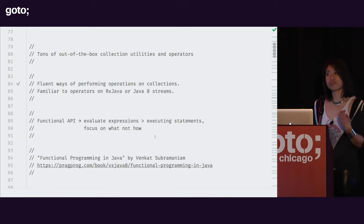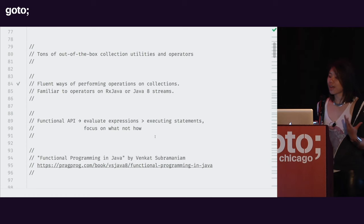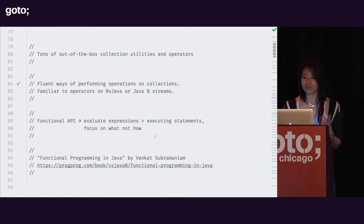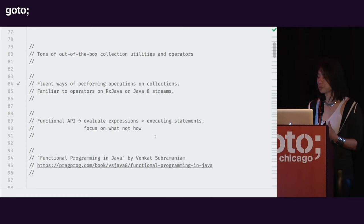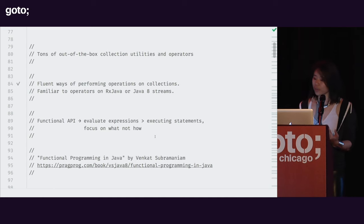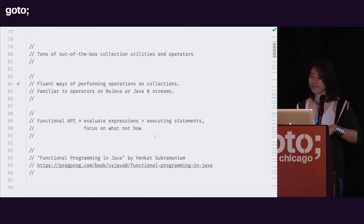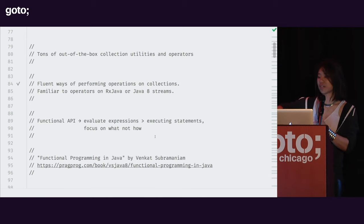I've never really had much experience with functional programming. I still don't know quite what it is — I don't know what a monad is. But I do understand that part of the idea of functional programming and this functional API for collections in Kotlin is the ability to express at a much higher level what we're trying to do in our code. You'll hear this phrase: focus on the what and not the how — evaluating expressions and high-level concepts rather than explicitly executing statements line by line.